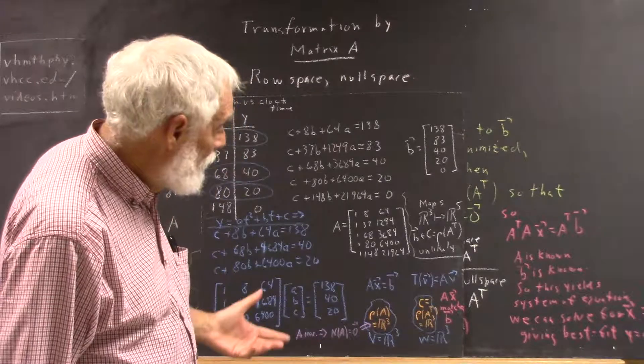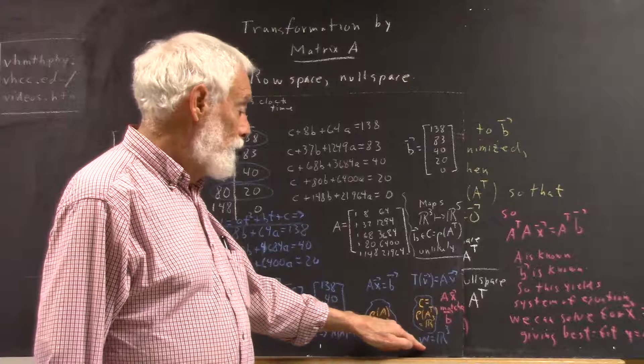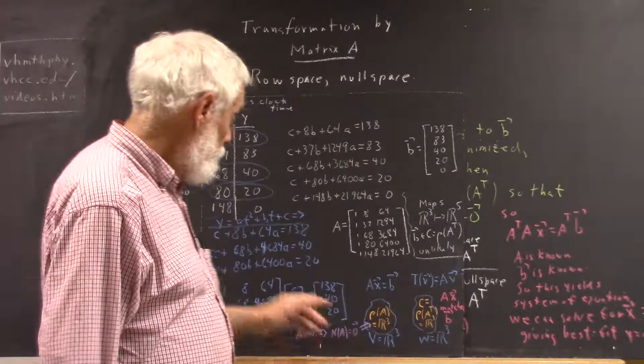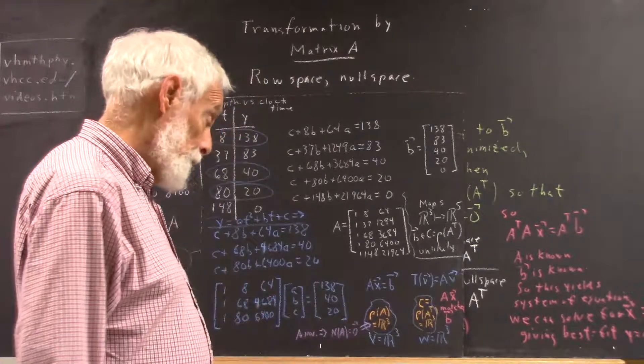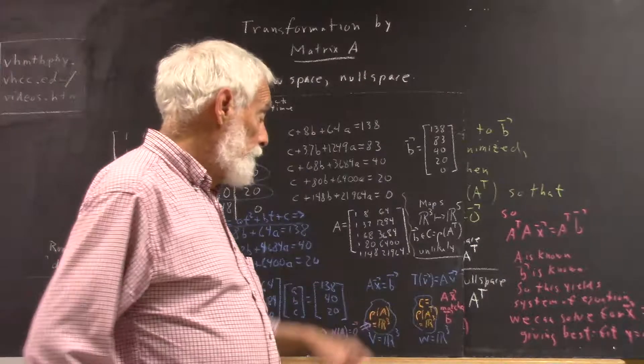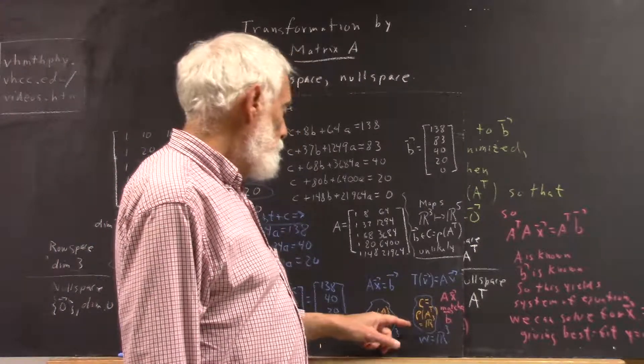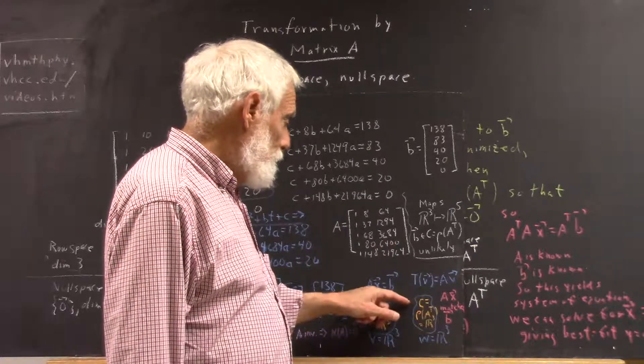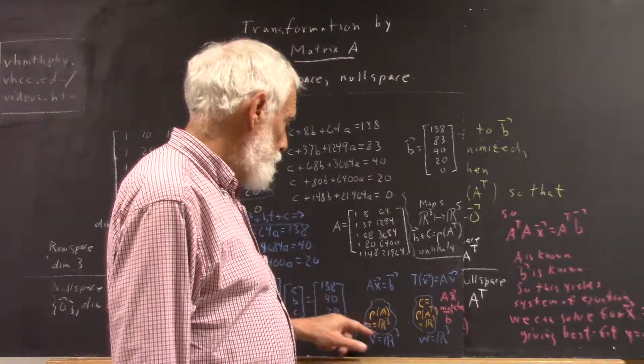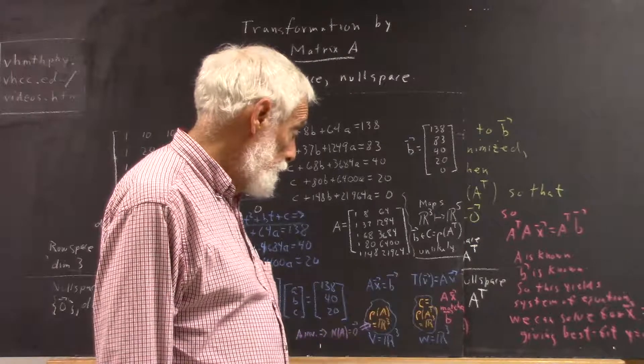In that space, in that case, the column space of w, which is another r3 because we're mapping r3 to r3 with this matrix, the column space would be the row space of a transpose, of course. But we're going to call that the column space. It's the image of the row space over here in w.